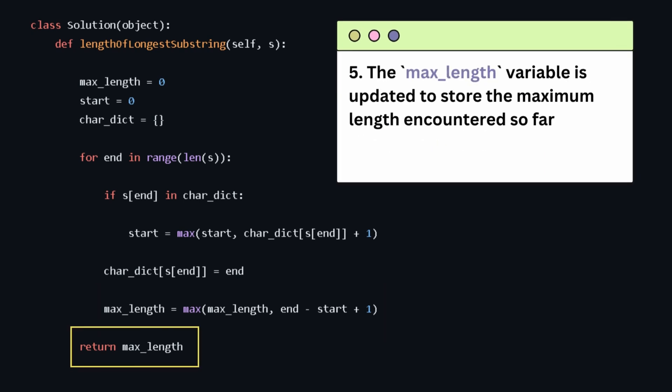Finally, the maxLength variable is updated to store the maximum length encountered so far. After the loop completes, the code returns the maxLength which represents the length of the longest substring without repeating characters.